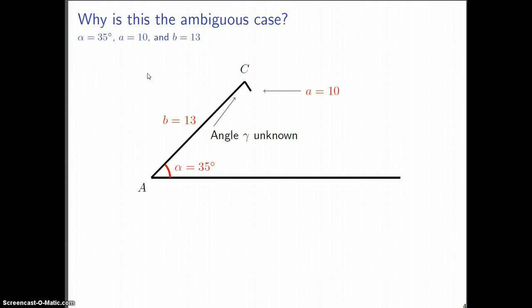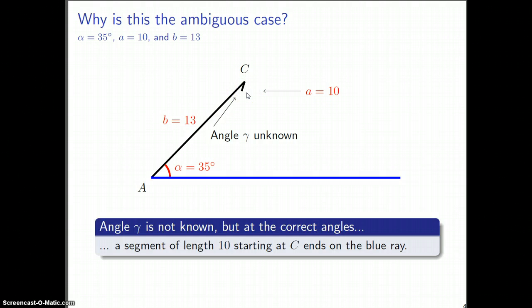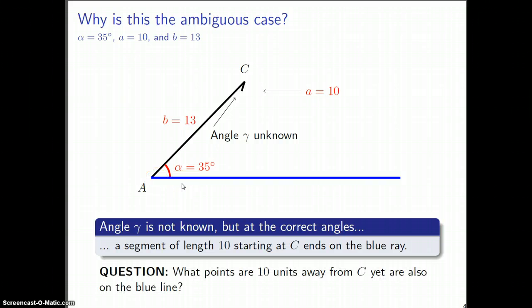It could look like this, or maybe a little bit over that way, or a little bit more. We're not quite sure, right? How much it swings more or less. Even though the angle is not known, if we pick the correct angle, and the problem really is that there are two angles, but if we get one of the right angles and we draw this segment of the correct length, 10 here, then that segment will end on this blue line right here. What points are exactly 10 units away from this point C, yet they're also on this blue line? Starting at this point C, let's draw on a circle of radius 10 and see where it crosses this blue line.